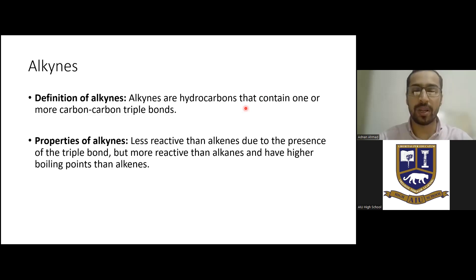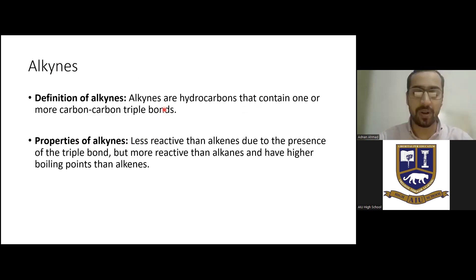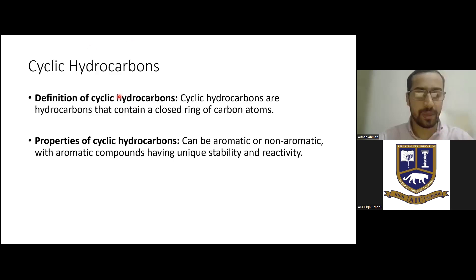Alkynes can have one triple bond or more than one triple bond. Properties of alkynes: less reactive than alkenes but more reactive than alkanes, and have higher boiling points than alkenes. Alkynes have somewhat lower reactivity because the triple bond brings the two atoms very close together, minimizing space between them. Another type of hydrocarbon is cyclic hydrocarbons — hydrocarbons that contain a closed ring of carbon atoms.